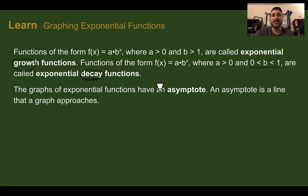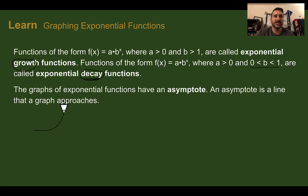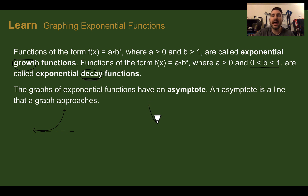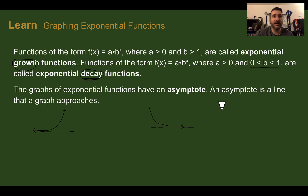Graphs of exponential functions have a feature called an asymptote — a line that the graph approaches. With exponential functions, that asymptote is usually a horizontal asymptote. For a growth function, there's an imaginary line where this part of the graph gets closer and closer to but doesn't actually touch. If it's a decay function, it goes down and keeps getting closer and closer to that line but never actually touches it. Whatever that horizontal line is, that is called your asymptote. Usually it's y equals zero, however it doesn't have to be.